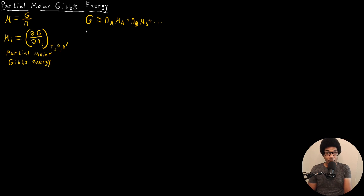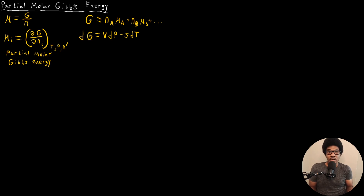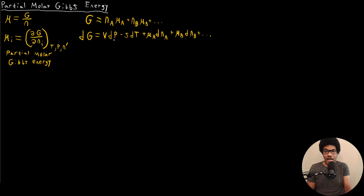If we want to look at an infinitesimal change in the Gibbs energy, we know the differential for Gibbs energy is VdP minus SdT — that's for the standard case where the number of moles isn't changing. If we do have a change in the number of moles, we need to add those terms in: the chemical potential of component A times the change in moles of A, plus the chemical potential of B times the change in moles of B, and so on. So now we've included the change in number of moles in our definition of the infinitesimal change in Gibbs energy.